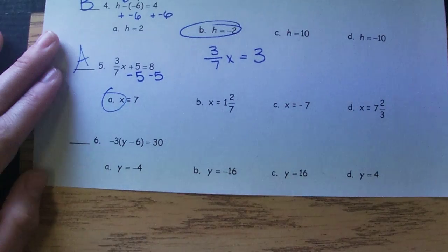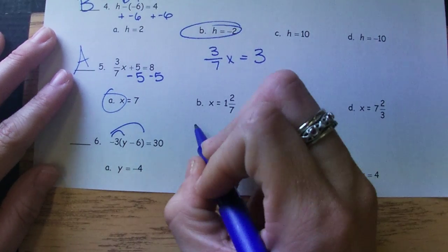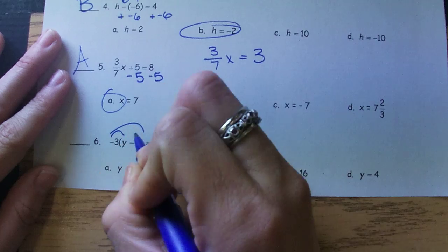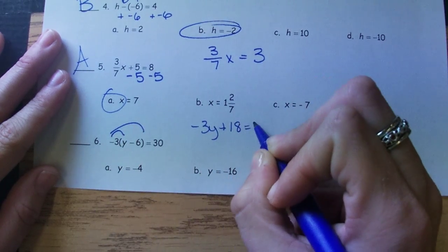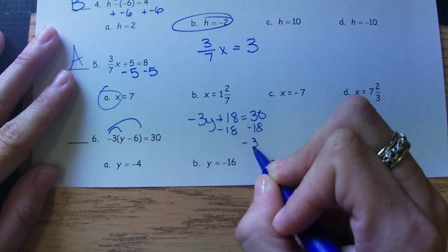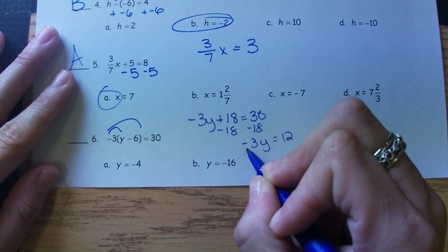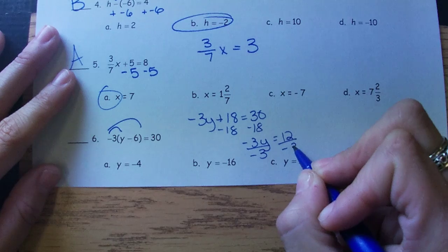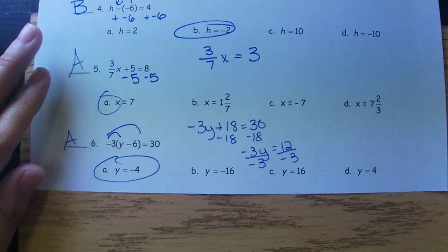Number six, we have parentheses, so we need to distribute. So we'll get a negative 3Y. A negative times a negative is a positive. We will undo addition and subtraction first. Divide by negative 3. We'll get a negative 4. So that is A.